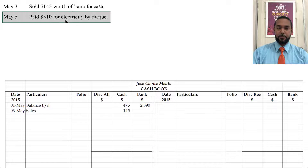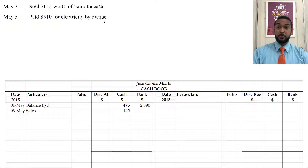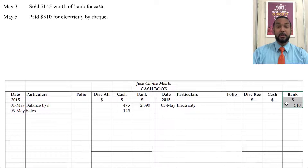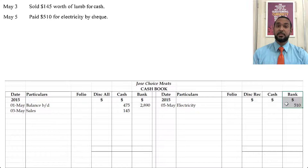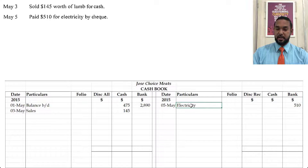On the 5th, we paid $510 for electricity by check. That's a payment, which is going to go on the credit side under the bank column. Payments reduce the amount of money in our account. Bank is an asset — to record a reduction in an asset, you have to credit the account. So on the credit side under bank, you're going to see $510. What did we pay? Electricity.